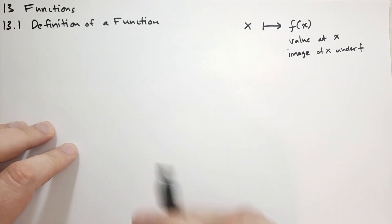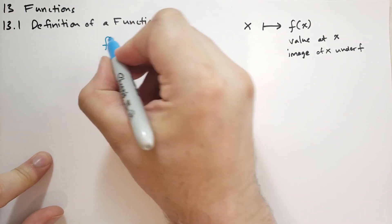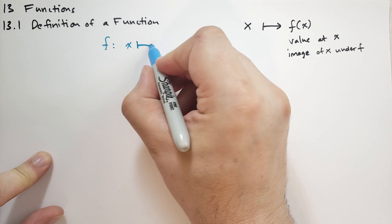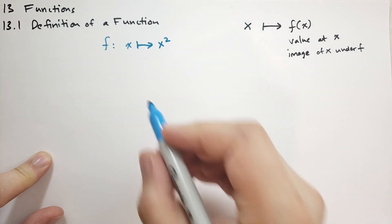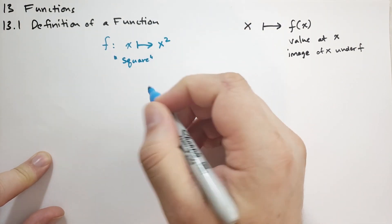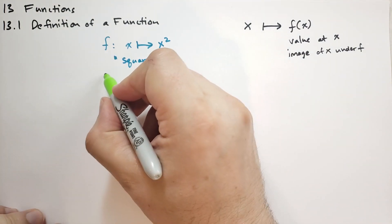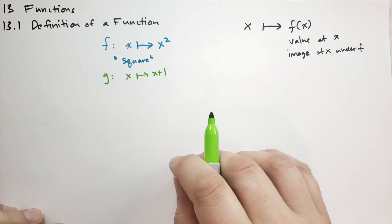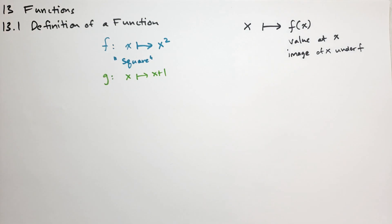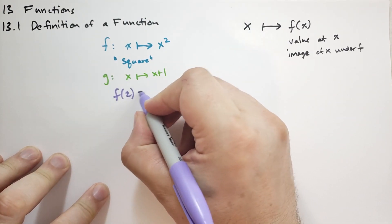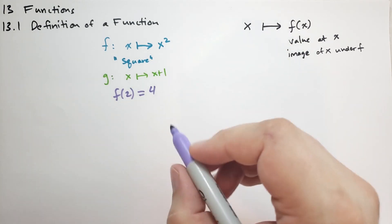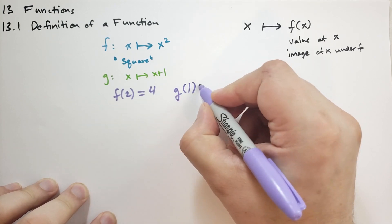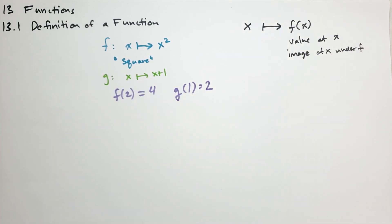So as an example, let's suppose that we had this function f that takes any value x and it squares that. So we might call this function the square. Another example, we might have the function g that takes x and maps that to x plus 1. We don't have a special name for this, but you can call that probably add 1 or whatever you want to call it. And when we use these functions, we would say f of 2, in the book he has 2. So 2 squared is 4. g of 1 is equal to 1 plus 1, which is 2. And we can do this for every possible value of x. Not just integers, not just rationals, but irrationals as well.